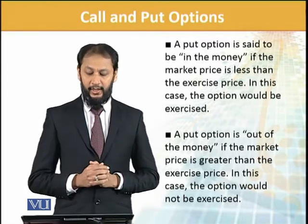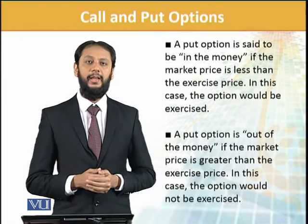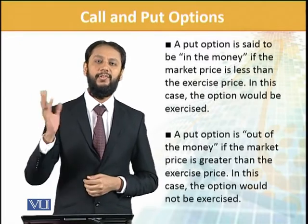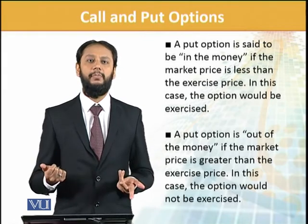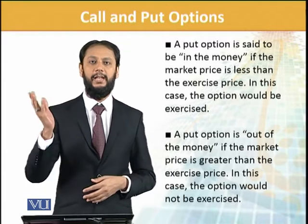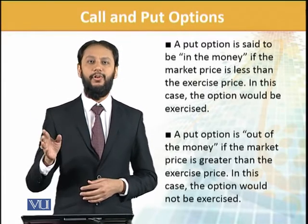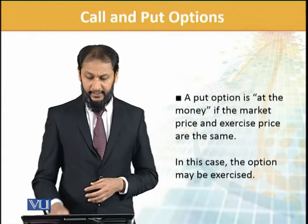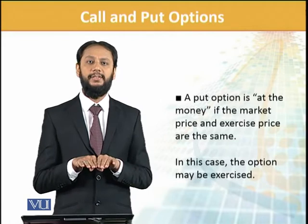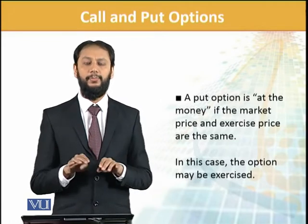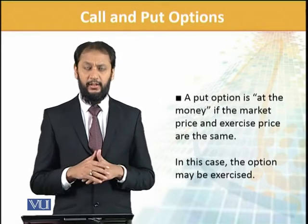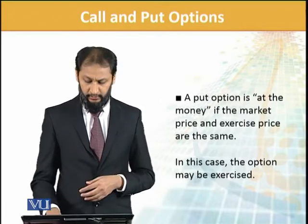A put option is 'out of the money' when the market price is greater than the exercise price. If I can sell at $50 through the option but the market is already trading at $57, there is no point selling through the option — I can sell in the market at $57. If the market price and exercise price are the same, the put option is 'at the money' — you can exercise or not; it's your particular choice.